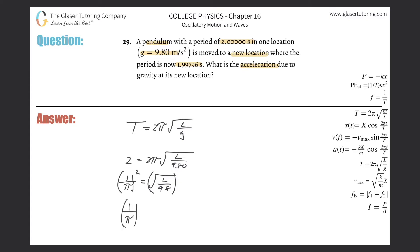So now we have 1 over π squared, that will be equal to l over 9.8, and then simply cross multiply the 9.8 out and there you go.